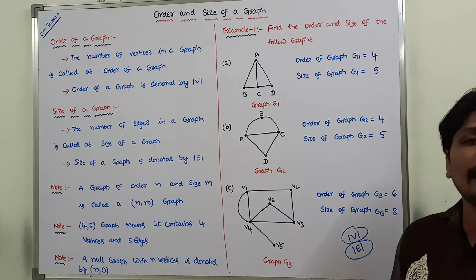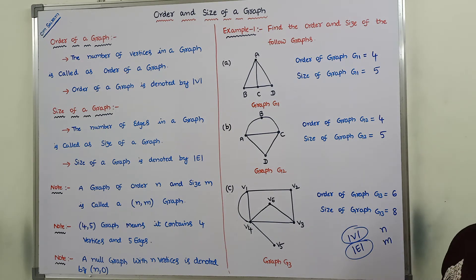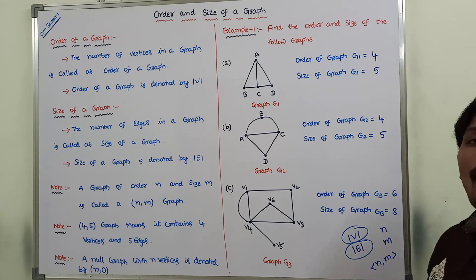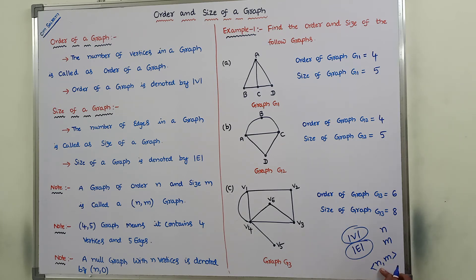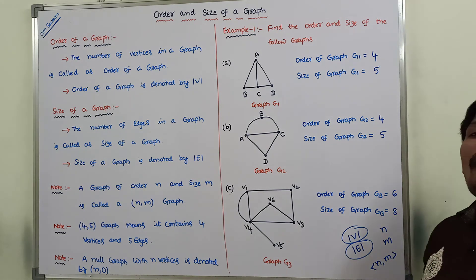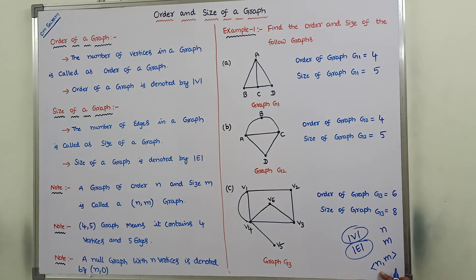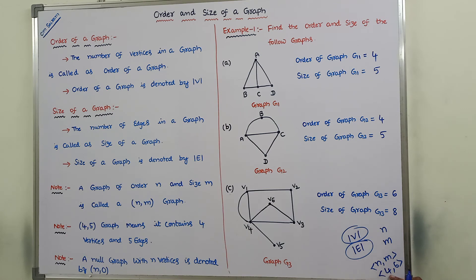Suppose we take a given graph G. It contains n vertices and m edges. Then that graph can be denoted as an (n, m) graph. An (n, m) graph means a graph that contains n number of vertices and m number of edges. For example, a (4, 6) graph means a graph which contains 4 vertices and 6 edges.